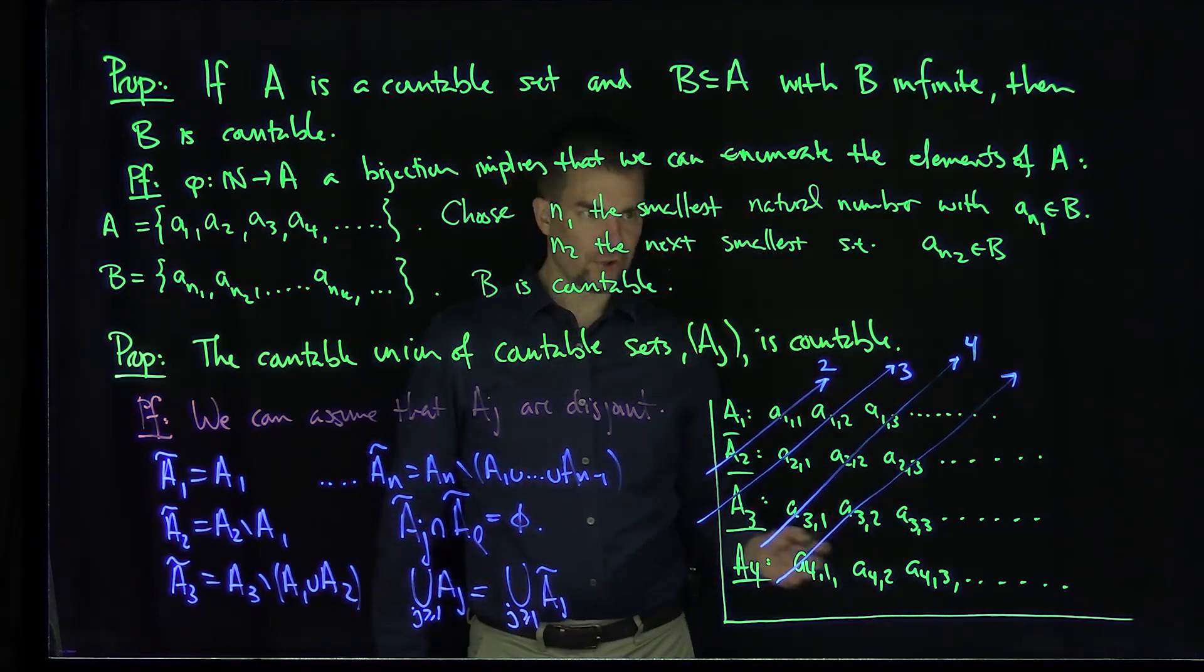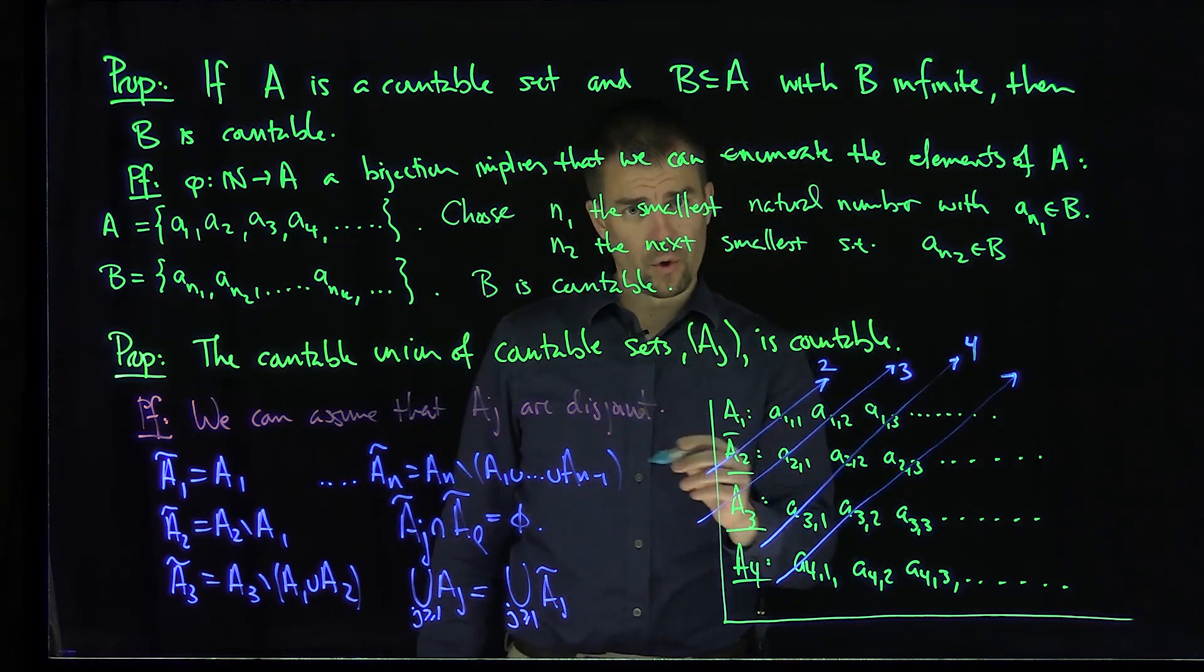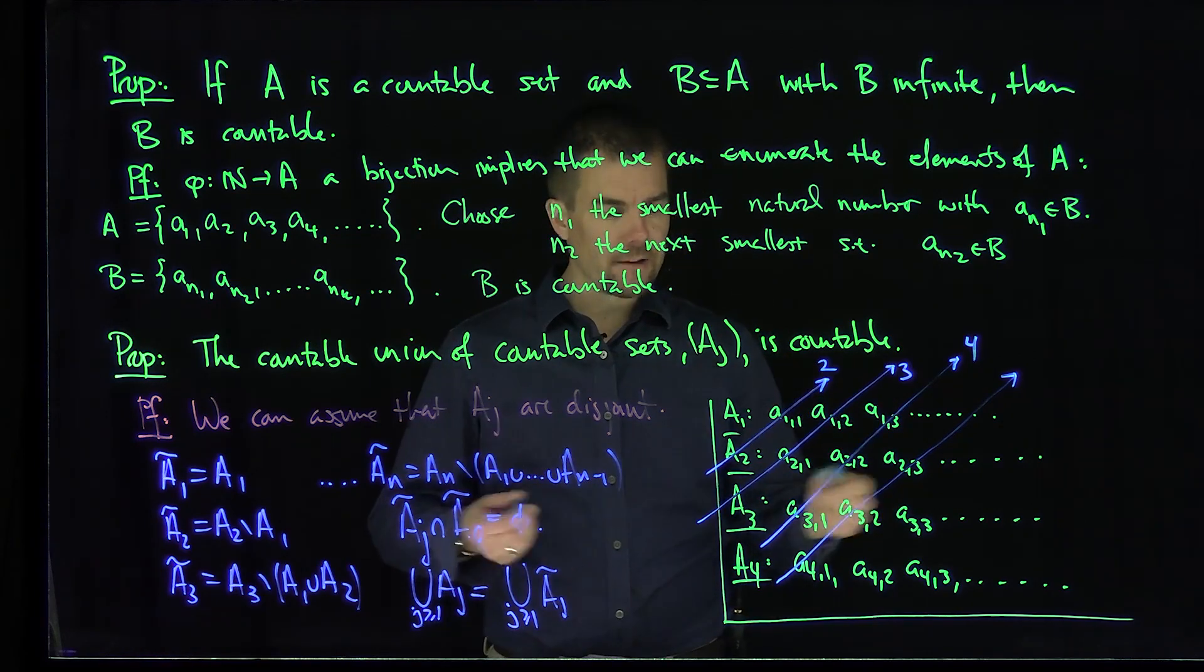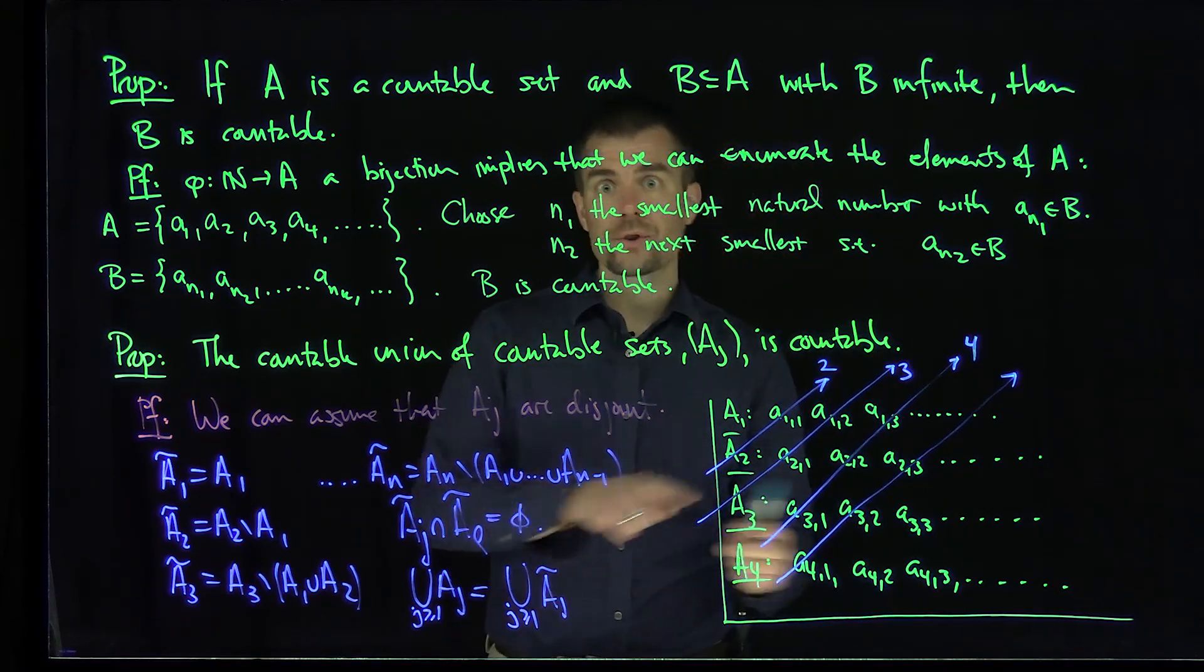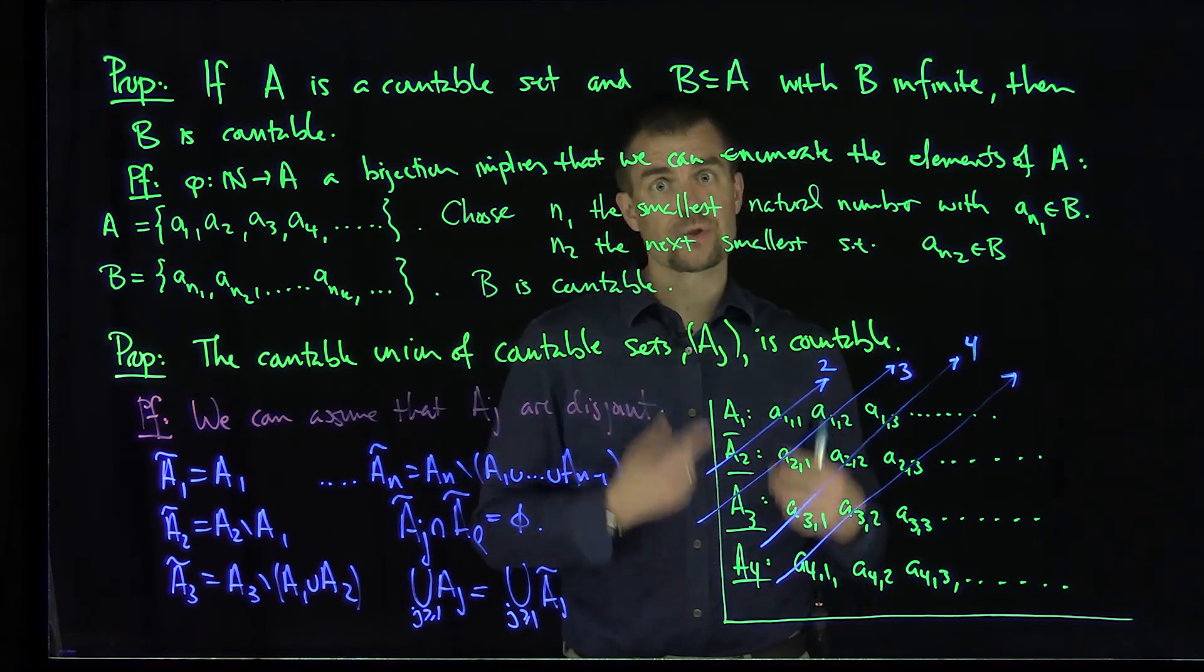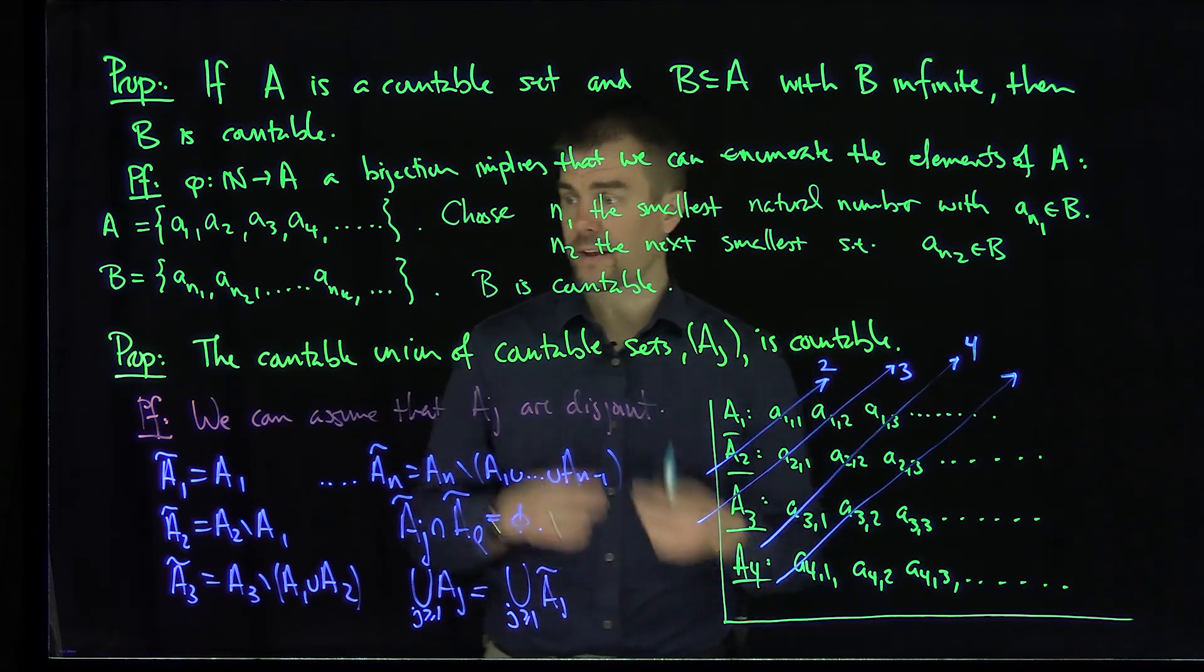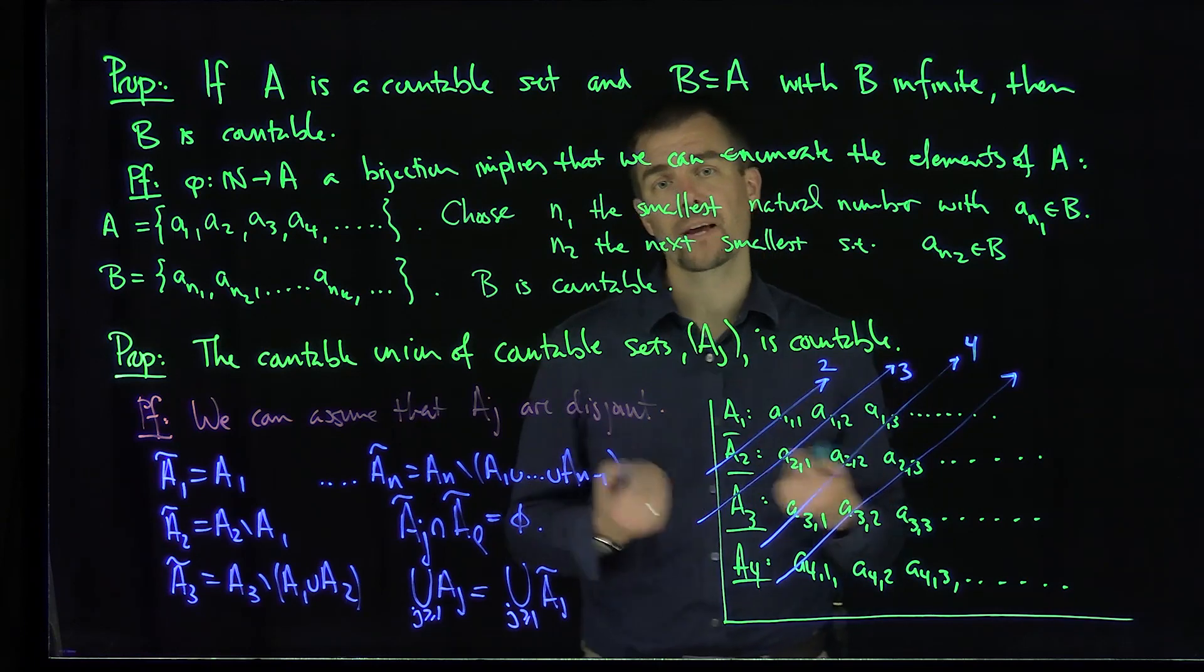And so in this fashion, by drawing all of these 45 degree tilt lines, I'm able to find a one-to-one correspondence between everything in N and everything in this infinite array. And now everything in this array, we can assume they're disjoint, so I don't get any repetitions, so that ensures that I have an injection and a surjection. And so this tells us that the countable union of countable sets by this procedure is countable. Thank you very much.